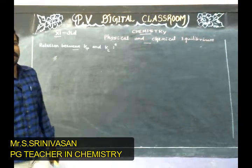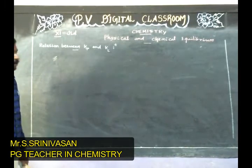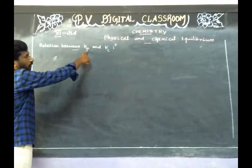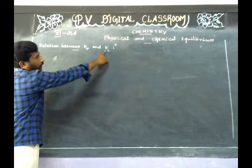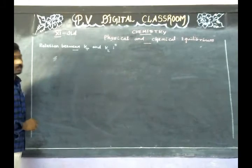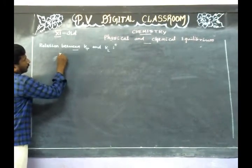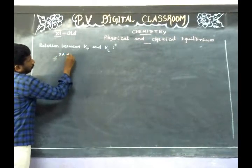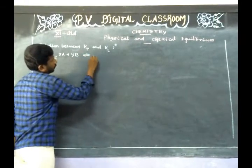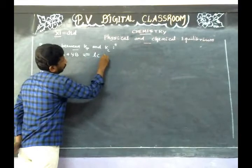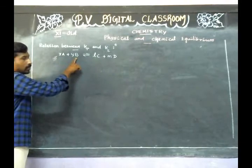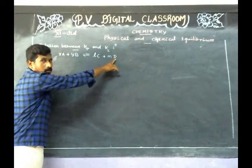Good morning students. In this class we are going to derive an expression which relates equilibrium constant in terms of partial pressure and equilibrium constant in terms of active mass. Let us consider a general equilibrium reaction: xA + yB ⇌ lC + mD, where A and B are reactants and C and D are products.